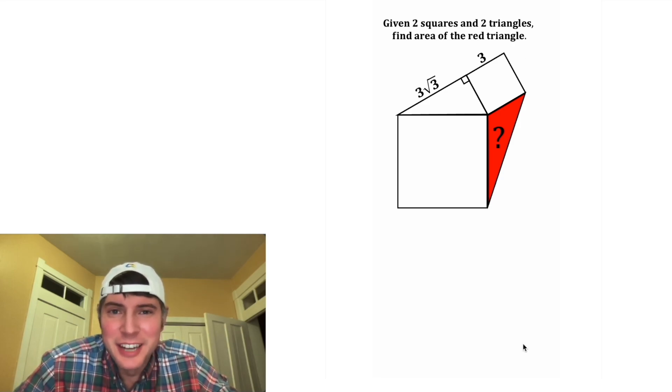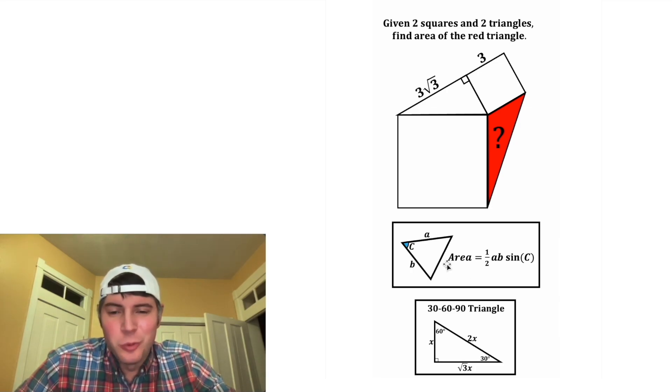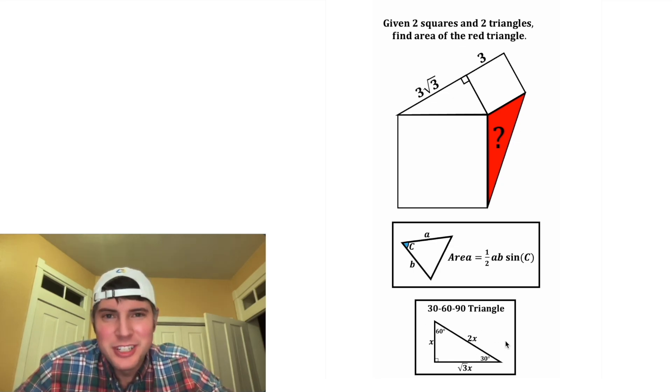I'll give you a hint right now. The method that I used used these notes right here. We have the area of any triangle is equal to one half times one side times another side times the sine of the angle in between them. And we also have 30, 60, 90 triangles where the hypotenuse is twice as long as the shortest side and the middle side is root three times the shortest side.